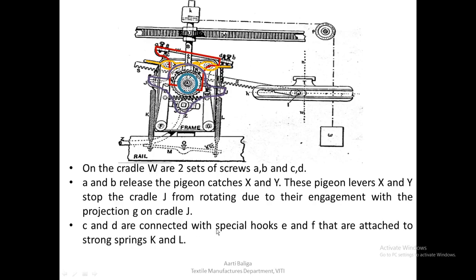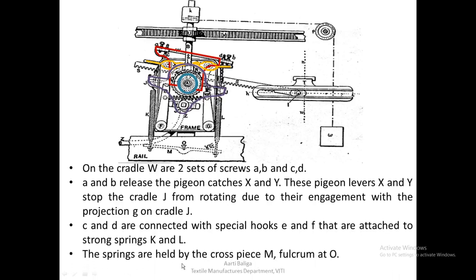Screws C and D are connected with special hooks E and F, which are attached to strong springs K and L. The springs are held by a cross piece below, marked as M, which is fulcrumed at O. This is the entire mechanism we have seen.